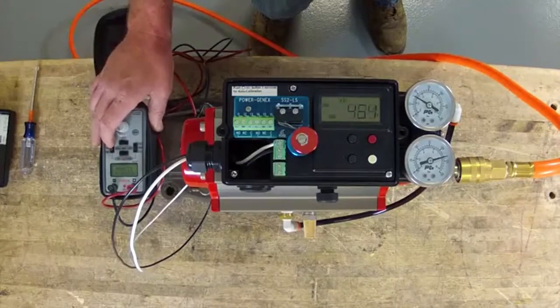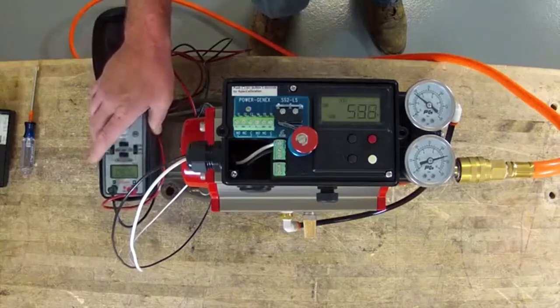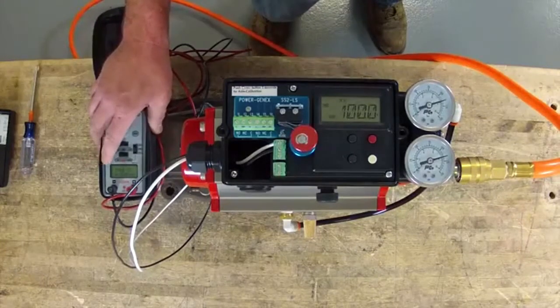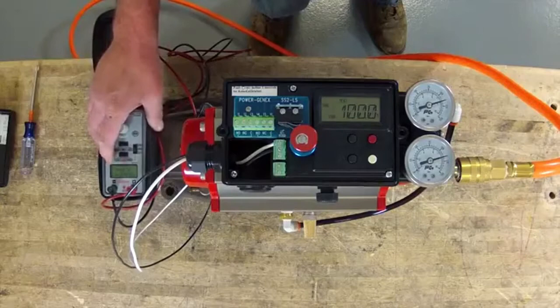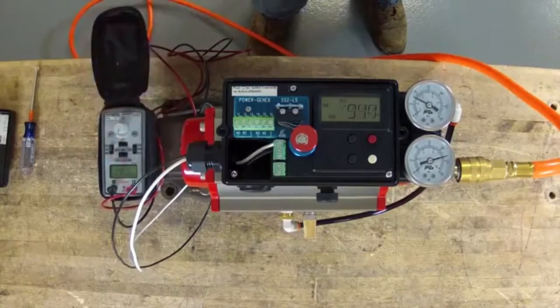Run it to 20 milliamp, and you're at 100%, and go close. And that is how easy it is to calibrate an SS2 positioner.